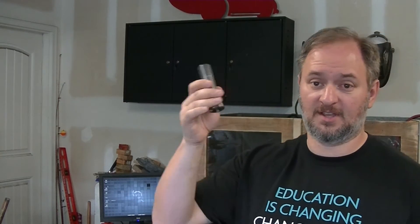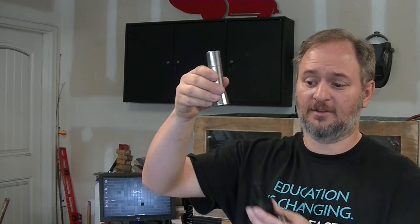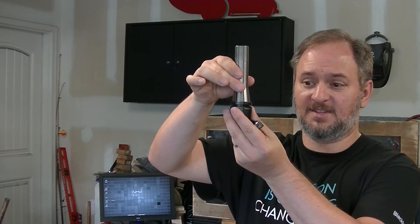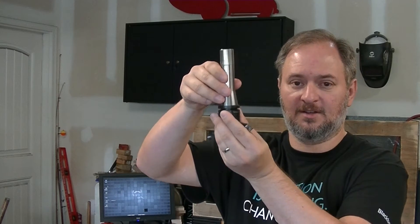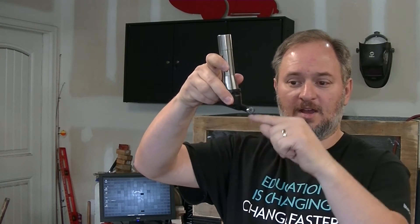So the nice part about these is your collet stays in the machine. All you have to do is loosen it up a little bit. It seats and you always have a nice repeatable height. So every time I put this in, I know how high this is going to be. So this gets us to our next set. The next thing was, why is this important for CNC?